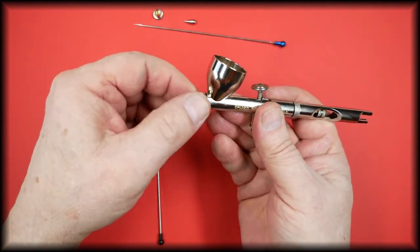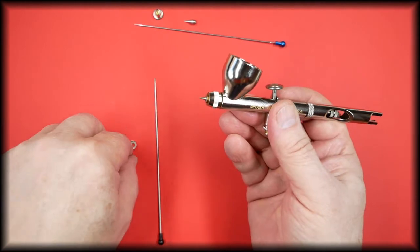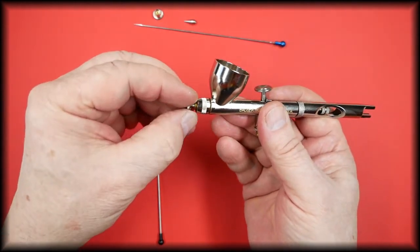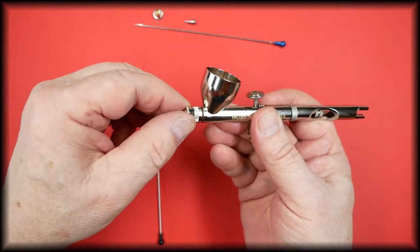This is all done in the middle of a table so that if any parts drop off they drop onto the table rather than the floor to never be seen again. We then fit the threaded part of the spray regulator.